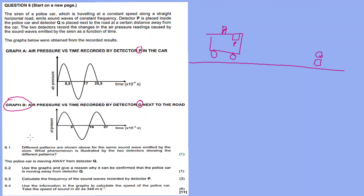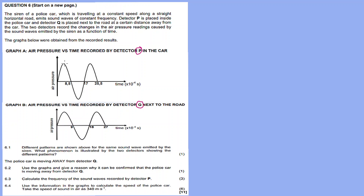Question 6.1 asks: different patterns are shown for the same sound wave emitted by the siren — what phenomenon is illustrated by the two detectors showing different patterns? Looking at the graphs for detector Q and detector P, they show different patterns. The phenomenon taking place is the Doppler effect. There is an apparent change in frequency detected by the two detectors.